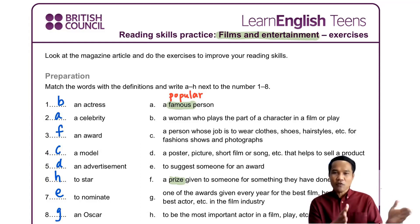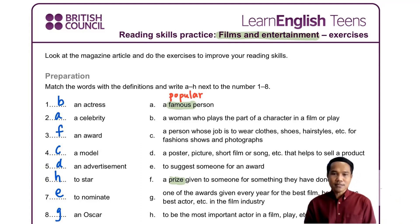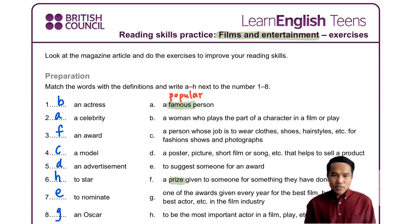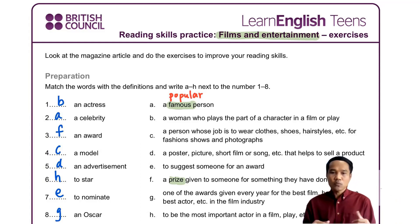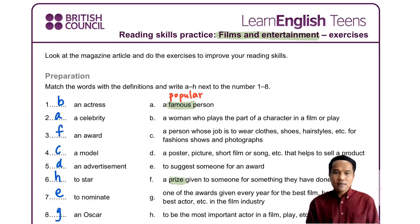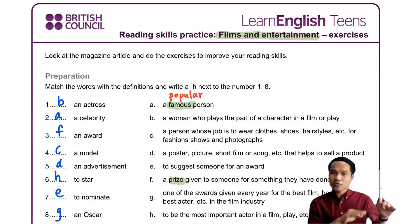Number seven: to nominate. To nominate means to suggest or recommend someone for an award — like to put someone forward to receive an award, contest, or prize. Number eight: an Oscar. An Oscar is one of the awards given every year for the best film, to give honor to actors and others in the film industry.